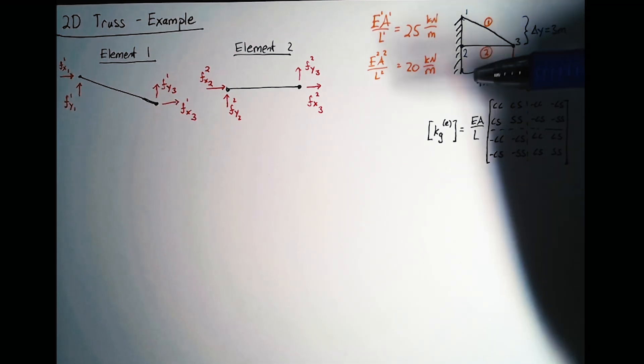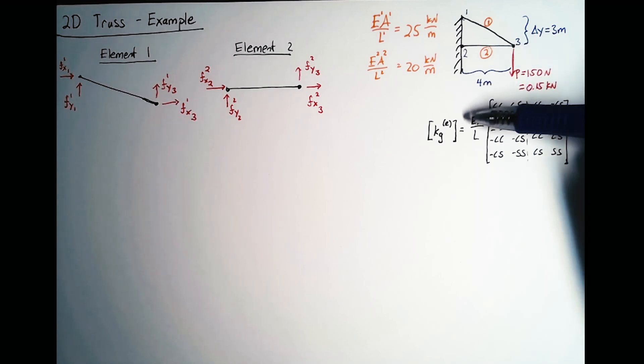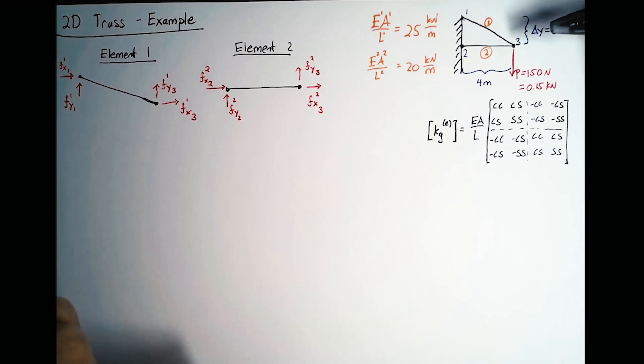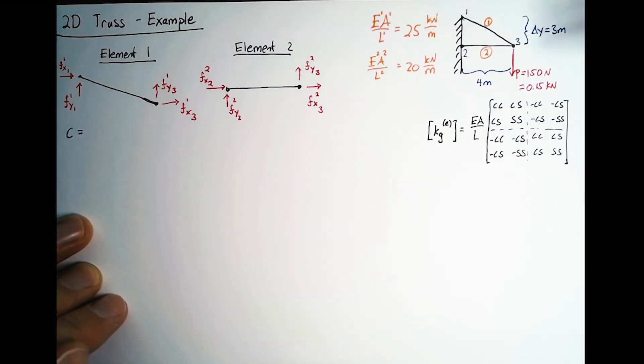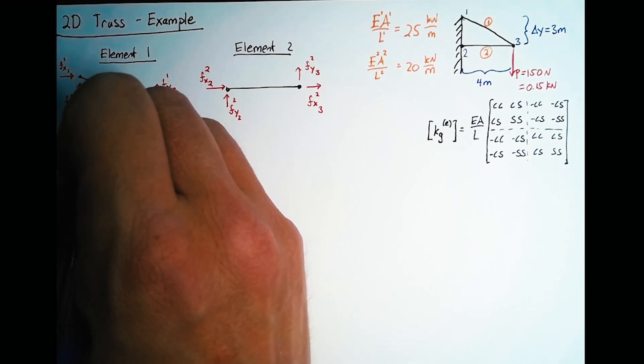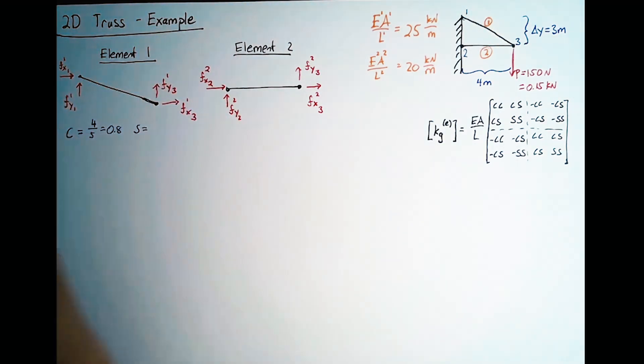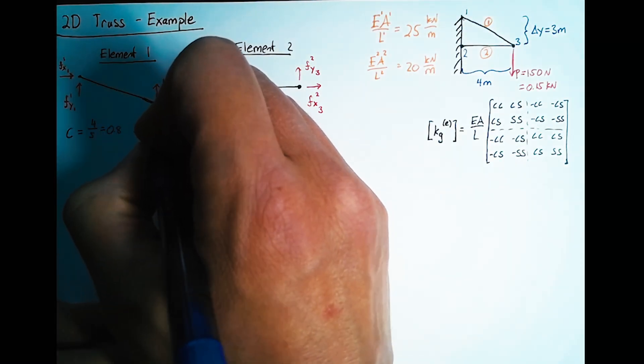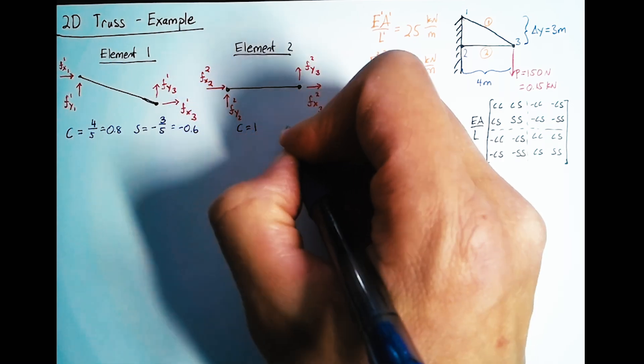We need to build the stiffness matrices, and we're going to need the cosines and sines for those. The nice thing about a 3-4-5 triangle is that we don't have to do any trig. Cosine is the X component divided by the hypotenuse. The X component was 4, the hypotenuse was 5, so this is 0.8. Likewise for sine, the Y component is negative 3 because we're starting at 1 and going to 3. The hypotenuse is still 5, so this is negative 0.6. For element 2, everything is in the X direction, so cosine equals 1 and sine equals 0.